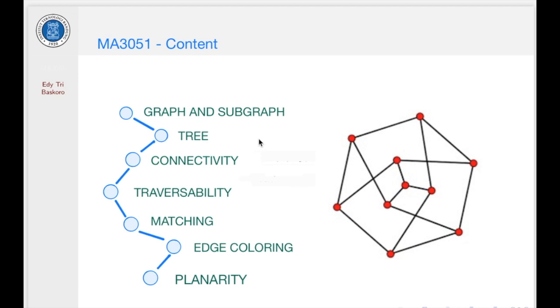And this course covers these seven topics. First, we are going to give you graph and sub-graph concepts. And then we discuss about tree. And then connectivity notion will be discussed. And then we are going to give you traversability notion. And then matching, edge coloring, and the last one will be on planarity.